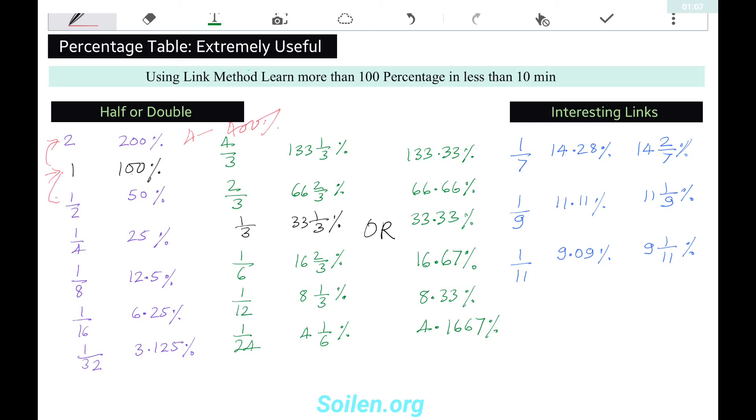Half of 1 is 1/2, which is 50%. Half of this is 1/4, 25%. Half of this is 1/8, 12.5%. Half of this is 1/16, 6.25%. Half of this is 1/32, 3.125%.